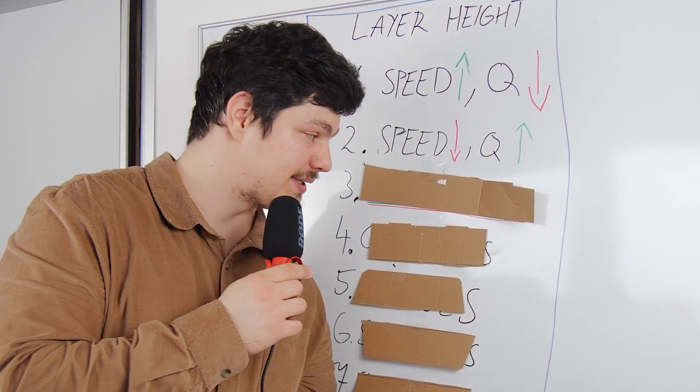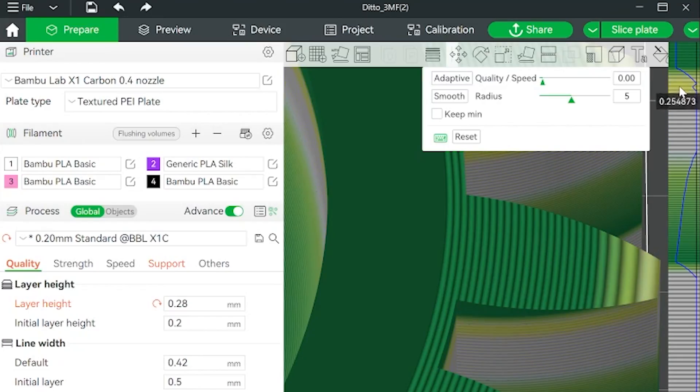You get the best of both worlds by using adaptive layer height. This will save you some time, but make sure those curvy lines are printed with smaller layer heights.